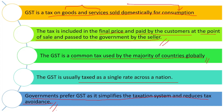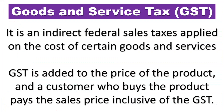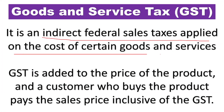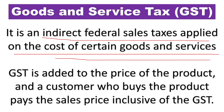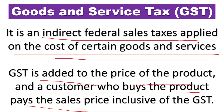GST is an indirect federal sales tax applied on the cost of certain goods and services. It is added to the cost of goods and services. GST is added to the price of the product and the customer who buys the product pays the sales price inclusive of GST. For example, if the product value is 20 rupees and the GST is 5 rupees, the customer has to pay a total of 25 rupees.